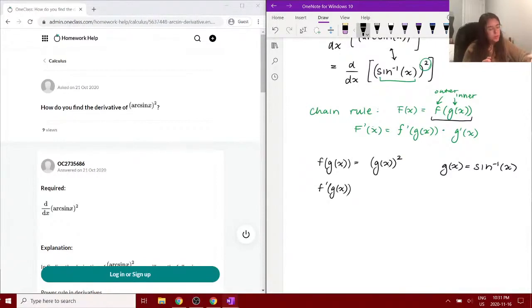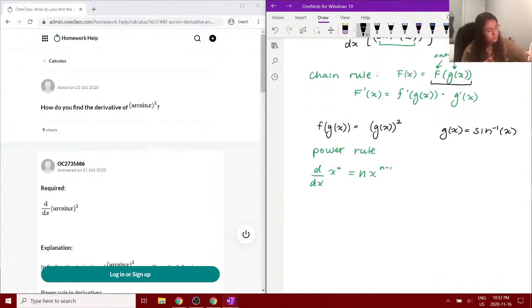We need to use the power rule. Remember, the derivative of a function to a power n is equal to the power times the function to the power of n minus 1. So the derivative of our outer function, applying the power rule, we have n is equal to 2. So we have 2 times g of x, and then instead of 2, now we have 2 minus 1, which is 1. So you don't need to write that at all.